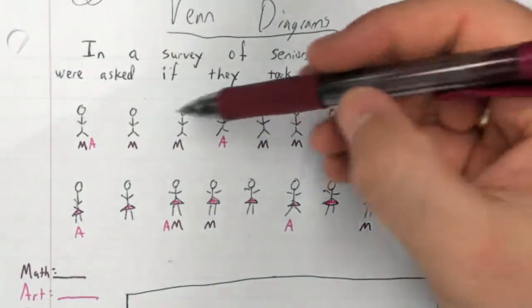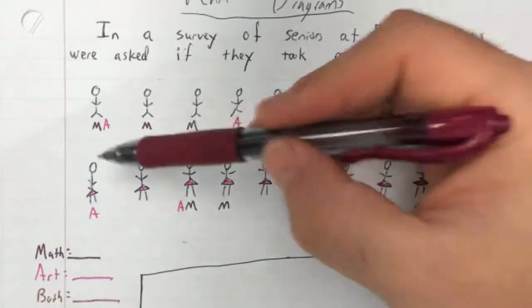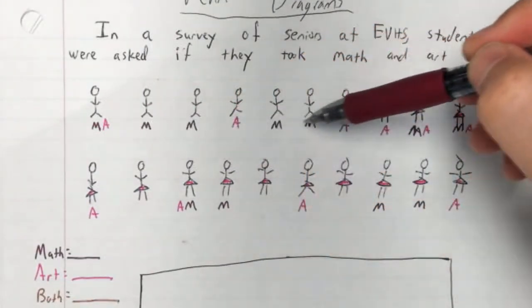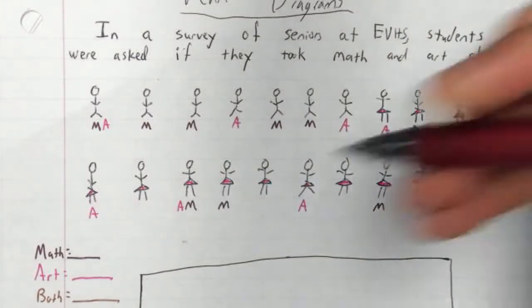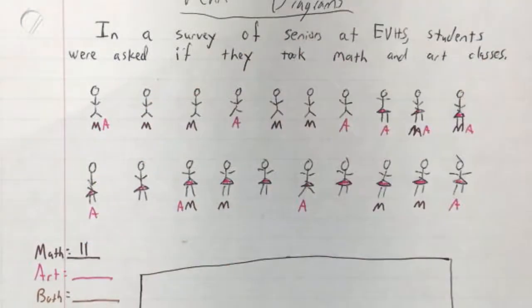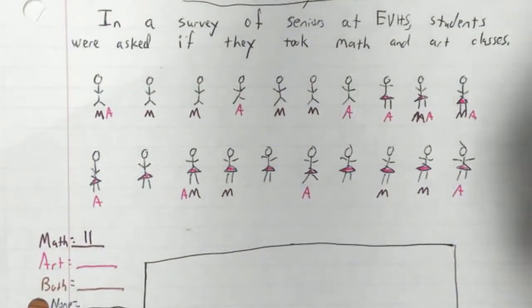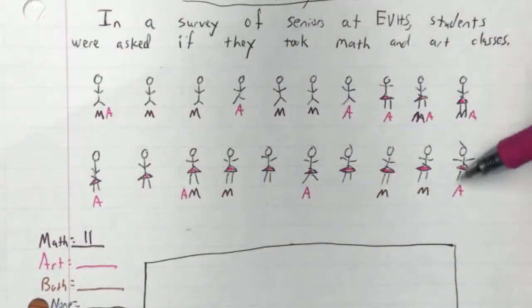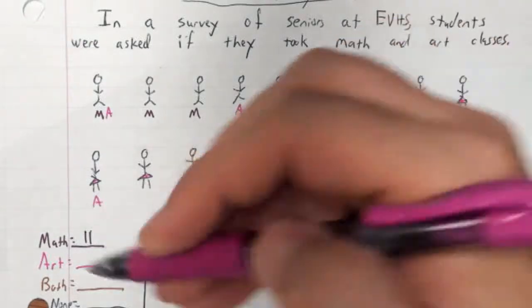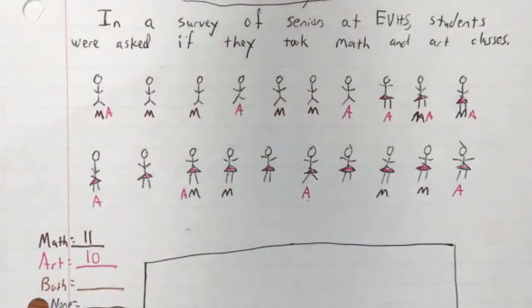So let's go through and calculate or find out how many of these 20 students took math. I've got one, two, three, four, five, six, seven, eight, nine, ten, eleven people took math. Now art, we've got one, two, three, four, five, six, seven, eight, nine, ten people taking art.